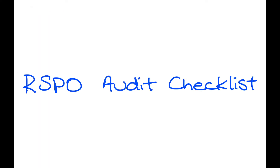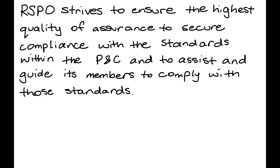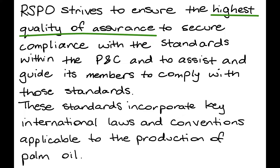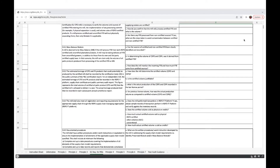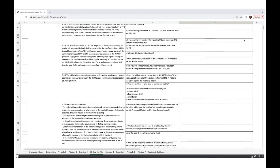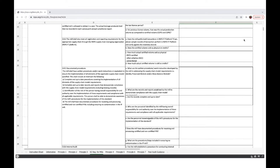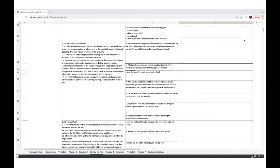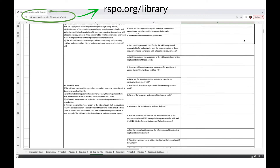RSPO Audit Checklist. RSPO strives to ensure the highest quality of assurance, to secure compliance with the standards within the principles and criteria, and to assist and guide its members to comply with those standards. These standards incorporate key international laws and conventions applicable to the production of palm oil. As such, RSPO has compiled an auditor's checklist, which can be used by auditors during the audit process. This is available on RSPO's website.